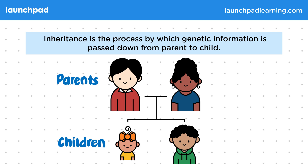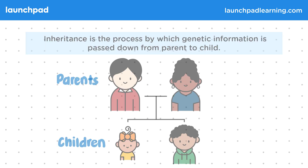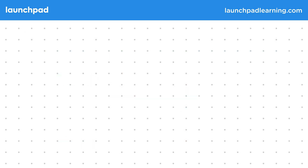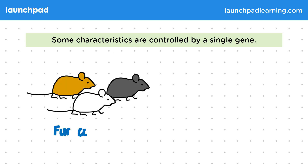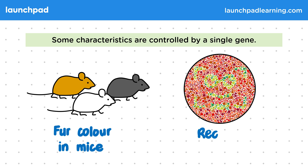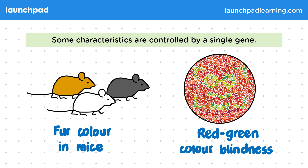So how are characteristics controlled in inheritance? Some characteristics are controlled by a single gene — for example, fur colour in mice, and also red-green colour blindness.